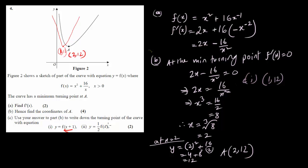Question (c2) is ½f(x). Multiplying by a half means a vertical stretch — the x-coordinate stays the same but the y-coordinate is multiplied by half. So the x-coordinate remains 2, and half of 12 is 6. The new turning point is (2, 6).